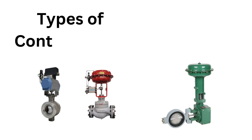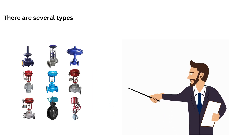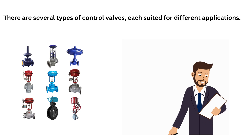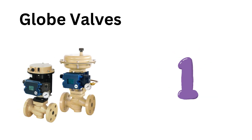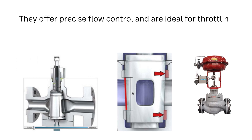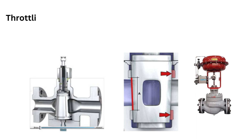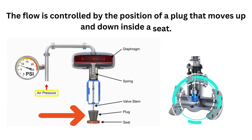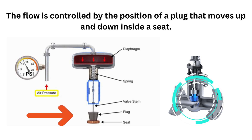Now let's discuss the types of control valves. There are several types, each suited for different applications. The first one is globe valves. Globe valves are the most commonly used control valves. They offer precise flow control and are ideal for throttling applications. Throttling is the process of limiting the flow of something, such as a fluid. The flow is controlled by the position of a plug that moves up and down inside a seat.